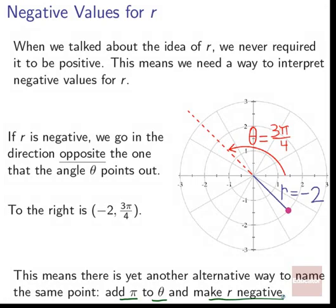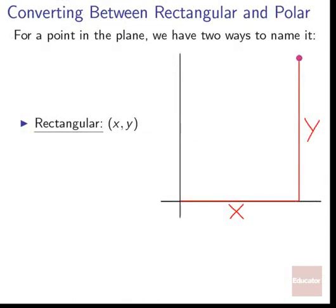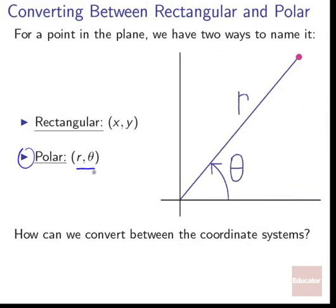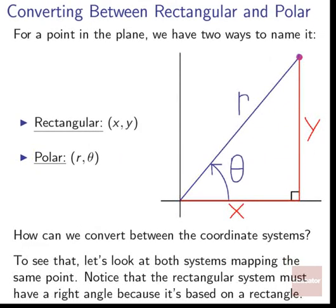We have to keep in mind when working with polar coordinates that there's not just one way to call a point. We have to think: could this be the same thing as something else? For a point in the plane, we now have two ways to name it — rectangular coordinates (x and y) and polar coordinates (r and theta). How can we convert between the two? Let's layer both systems simultaneously and use basic trigonometry.